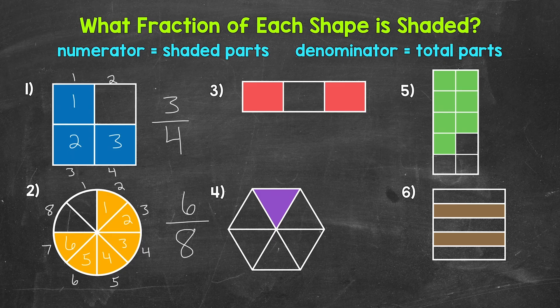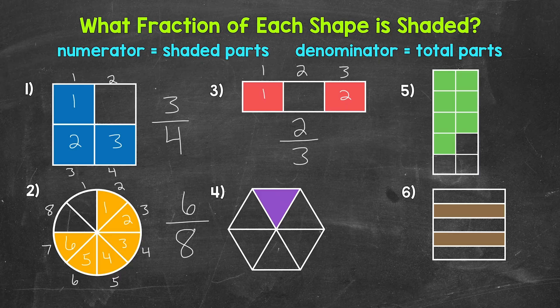Moving on to number three. Let's start with the denominator again. So how many total equal parts has this whole rectangle been divided into? One, two, three. So three is our denominator. Now we need the numerator — how many equal parts are shaded? One, two. So two is our numerator. Two out of three parts are shaded. Our fraction is two over three, which we say two thirds.